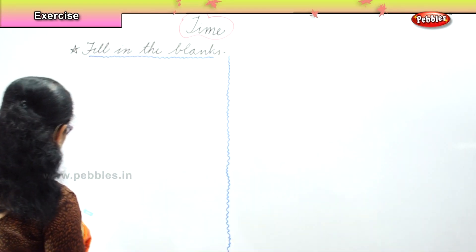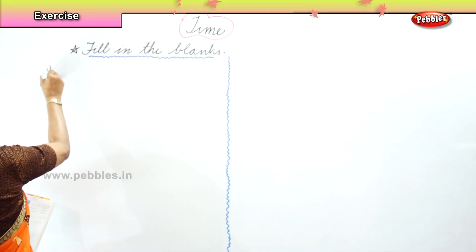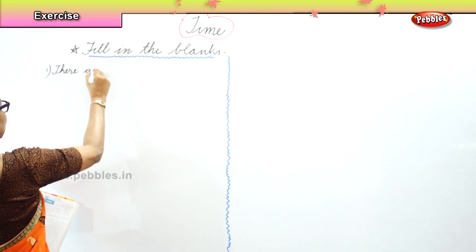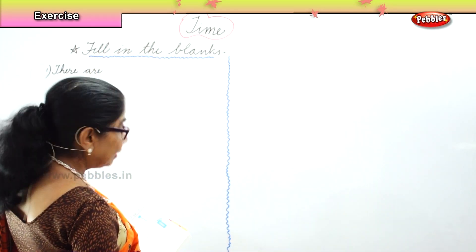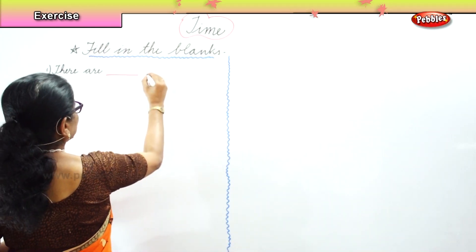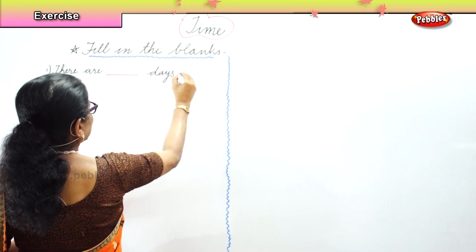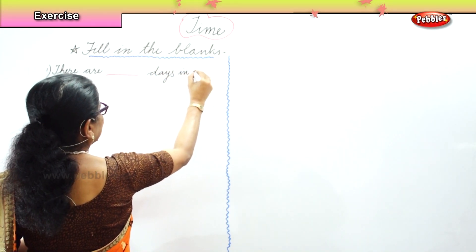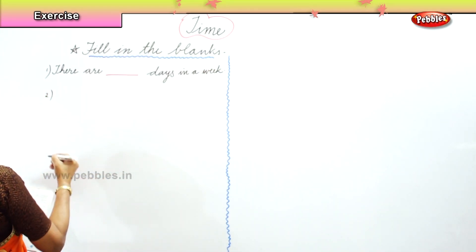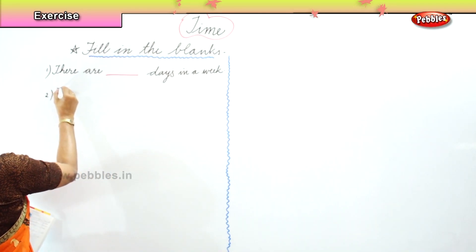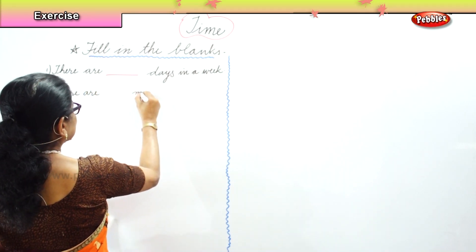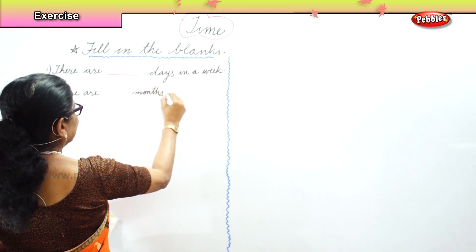The first fill-up is: there are dash days in a week — how many days in a week? And the next one is: there are dash months in a year — there are dash months in a year.